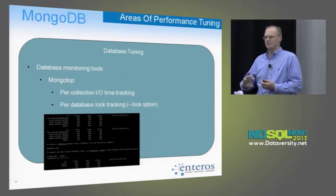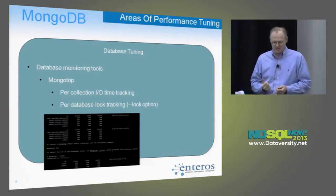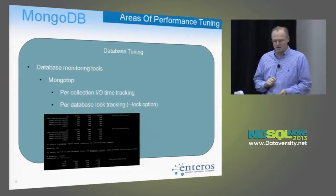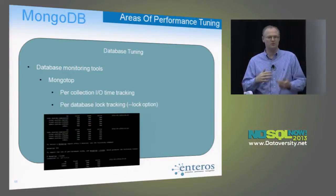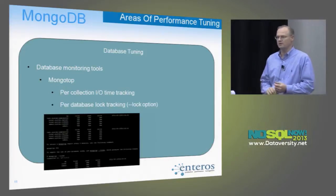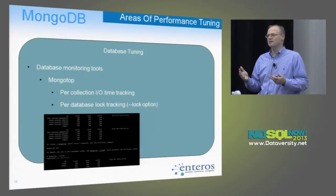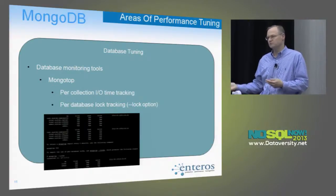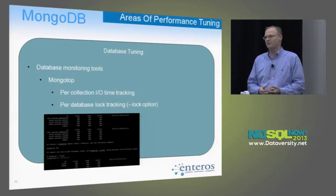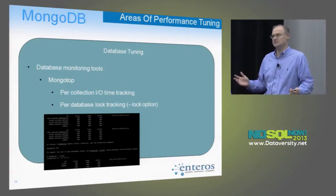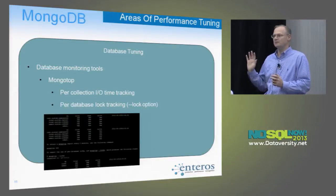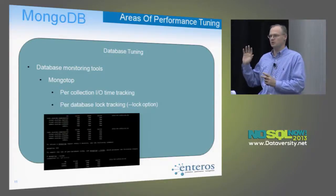Another useful utility is mongotop. It provides good detail at the collection level and database level — you can see reads, writes, total time spent per collection, and with the --locks option you can see database-level lock time spans. Again, don't just look at this when you have a problem — log it constantly. As a professional DBA, the worst situation is when your manager asks what happened and you don't know. Collecting data has to be a company process. If management wants to stop it, that's their call — but don't not collect data by default.